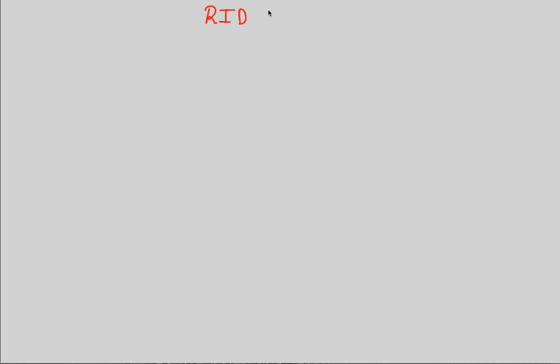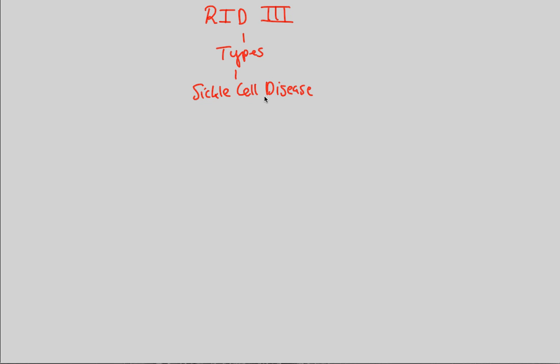In our previous video, we established a recessively inherited disorder known as sickle cell disease. This next flowchart will be a conclusion to recessively inherited disorders — we'll entitle it recessively inherited disorders, Roman numeral 3, since it's our third flowchart. We were talking about different types; in our previous video, we established cystic fibrosis and also sickle cell disease. This is a continuation of understanding sickle cell disease. We already established how it happens, why it happens, what's normal, and what's abnormal. Now what we want to do is look at some very critical and interesting genetic results of this disease.